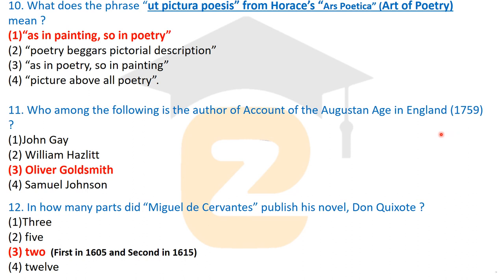Question twelve: in how many parts did Miguel de Cervantes publish his novel 'Don Quixote'? The correct answer is two parts. The first part was published in 1605 and the second part of 'Don Quixote' was published in 1615. Friends, please note down these important facts and details.